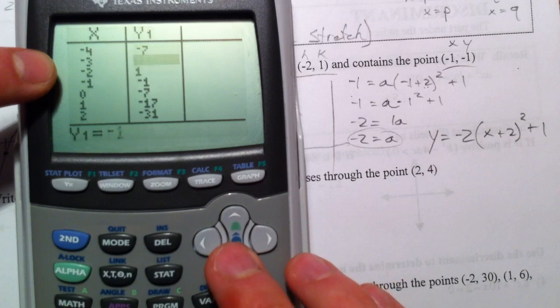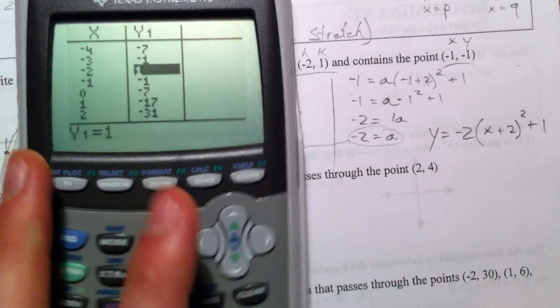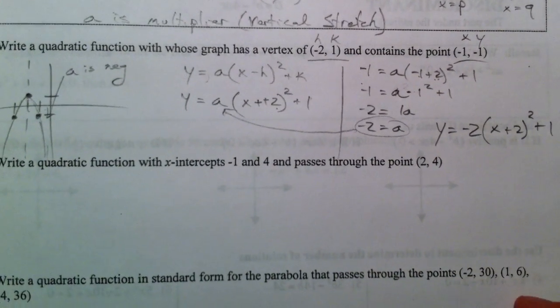And first off, negative 1, negative 1 is in there as a point. And also, the biggest point that we get is negative 2, 1, and so that must be our vertex, that's our maximum. So there you have it, first form done.